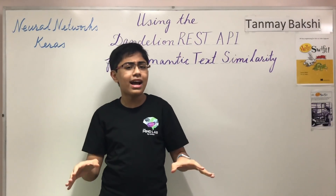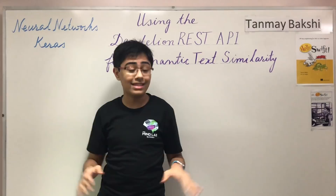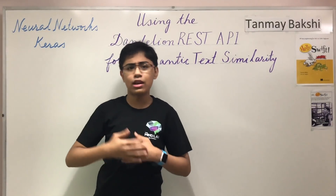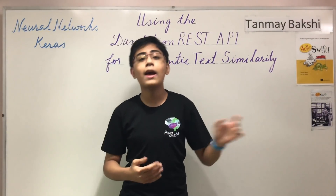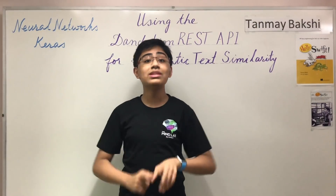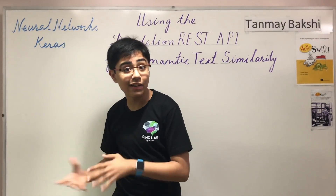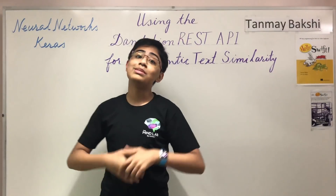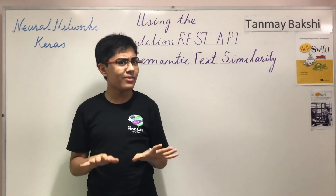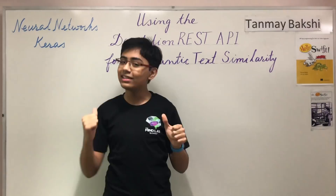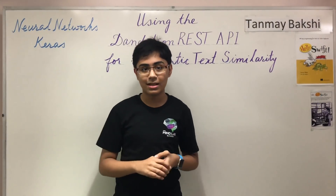Dandelion API actually has a lot of different APIs relating to natural language, such as natural language classification and entity extraction. But one of those is text similarity, and not only do they provide semantic text similarity but also syntactic text similarity. This is a very interesting API, so let's talk a little bit more about the back-end technology of such a system.